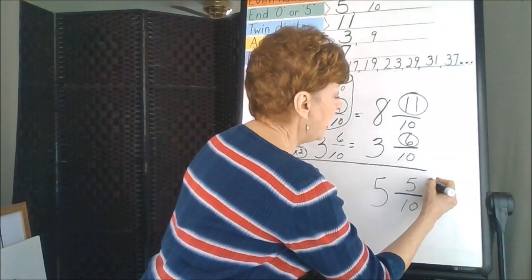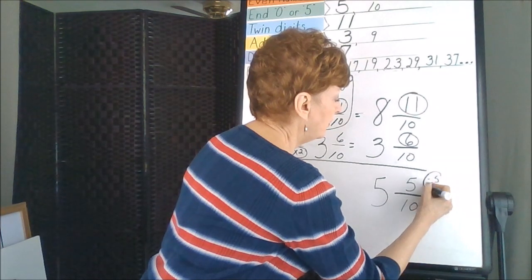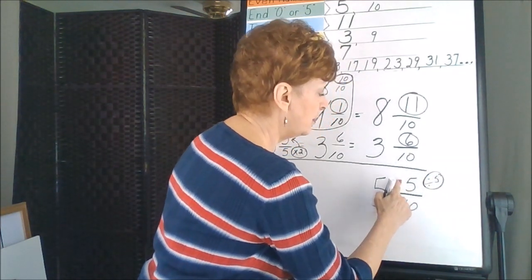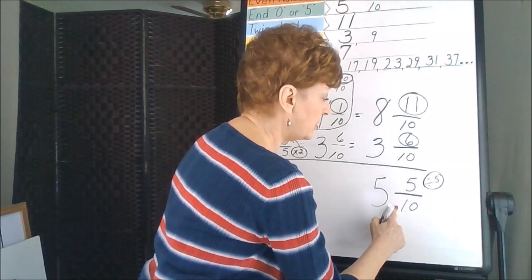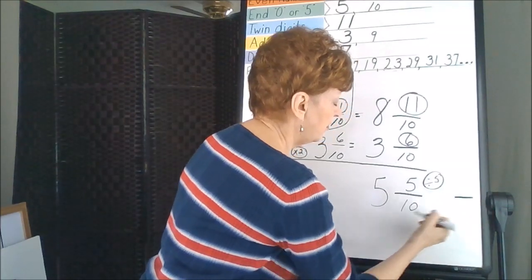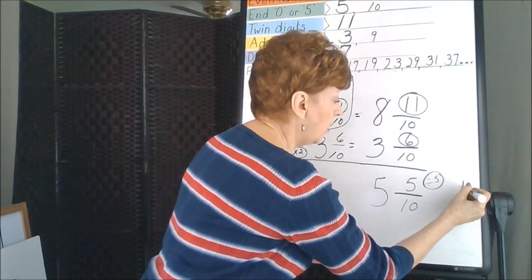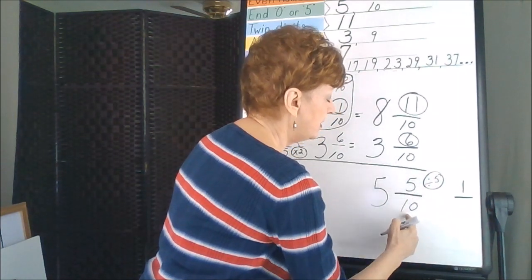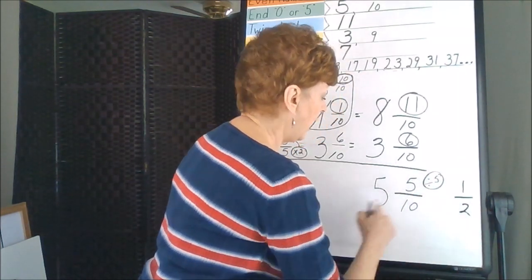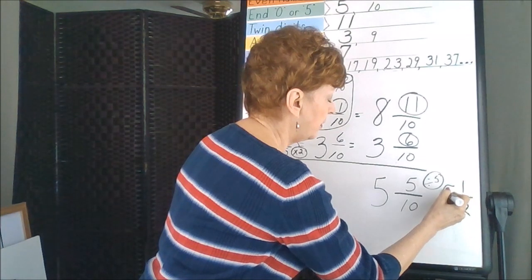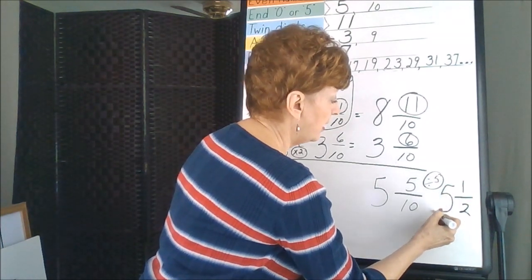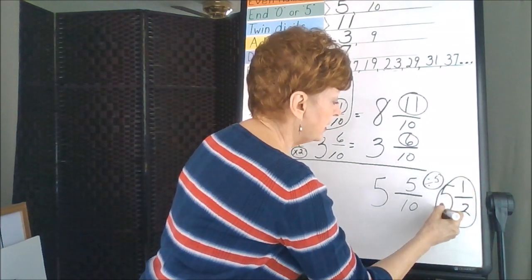We're going to divide by 5. This is how we're going to put the fraction in lowest terms. So let's put our fraction out here. 5 divides into 5 one time. 5 divides into 10 two times. And then pull over your whole number. So your fraction now is in lowest terms.